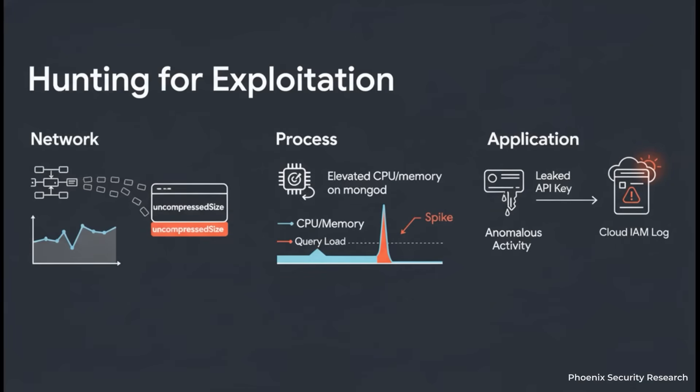For the SOC and incident response folks out there, here's what to hunt for. On the network, you're looking for a lot of small Zlib-compressed requests that are claiming a ridiculously large uncompressed size. On the box itself, watch for your MongoDB process suddenly spiking in CPU or memory for no good reason. And at the application level, look for the aftermath: sudden API key failures, weird activity in your cloud IAM logs — that could be a sign that a stolen credential is in play.